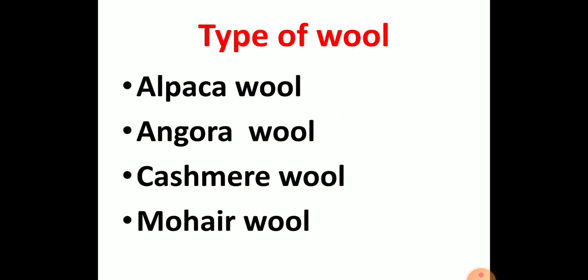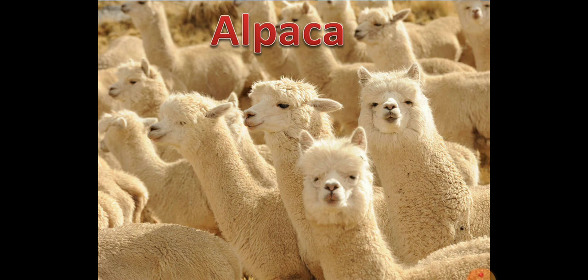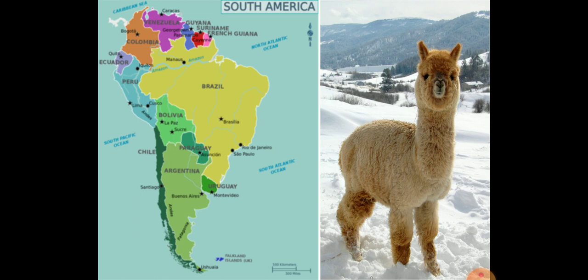There are different types of wool depending on the various animal sources. The types include alpaca wool, angora wool, cashmere wool and mohair wool. Alpaca wool is obtained from an animal known as the alpaca, which is mostly found in South America. Its wool is soft, fine, warmer and lighter than sheep's wool.